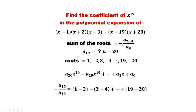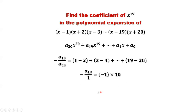So here, following this formula: negative A19 over A20 equals the sum of all the roots: 1, negative 2, 3, negative 4, ... up to 19, negative 20. We group them in pairs of two. How many groups? Totally we have 10. Each group gives: 1 minus 2 equals negative 1, 3 minus 4 equals negative 1, ... 19 minus 20 equals negative 1. So there are 10 groups of negative 1.